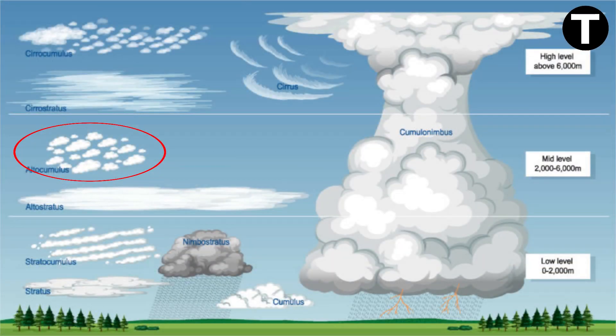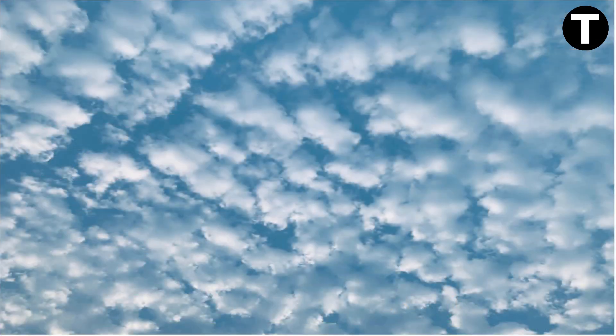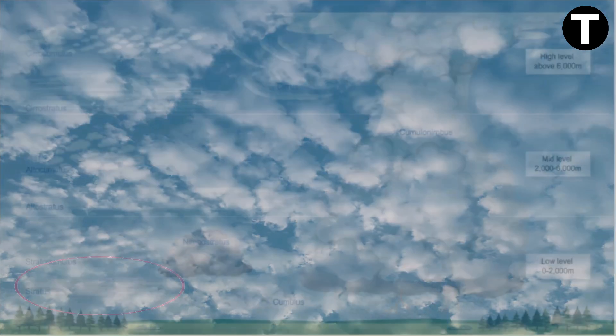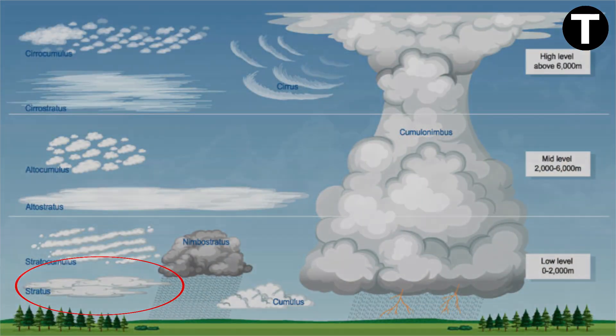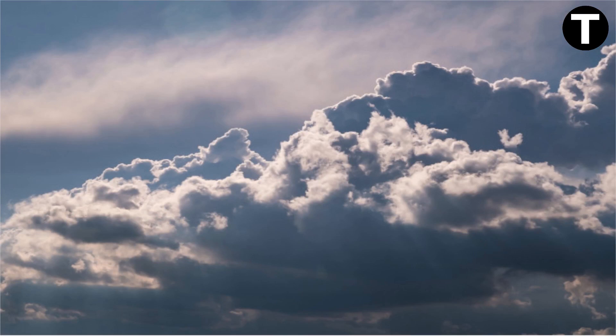Altocumulus clouds show off their lamellae, pebbles, and rolls. Their shadows set them apart from cirrocumulus clouds. Stratus clouds, characterized by a grayish, uniform appearance, often herald drizzle or fine droplet precipitation.